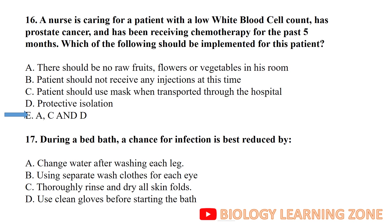A, C, and D are the correct options. During a bed bath, the chance for infection is best reduced by using a separate washcloth for each eye — a separate washcloth for each eye.